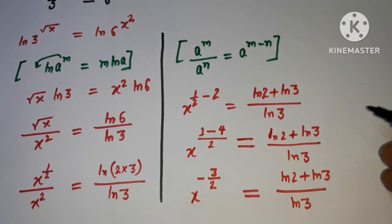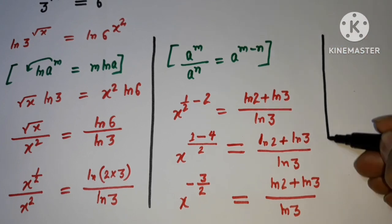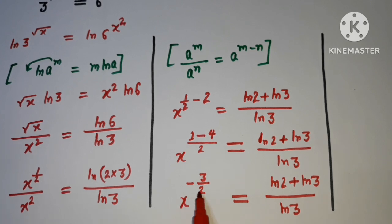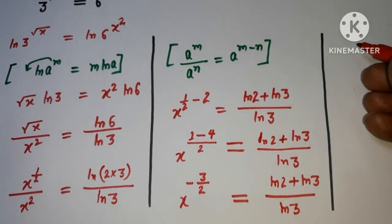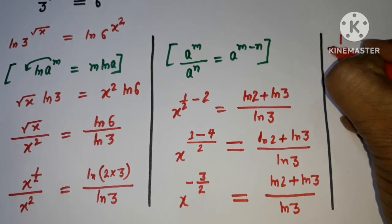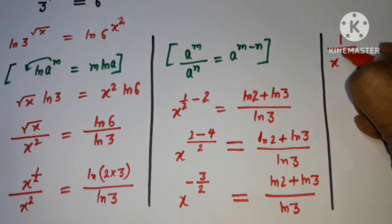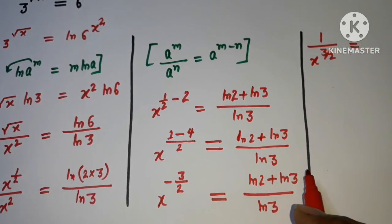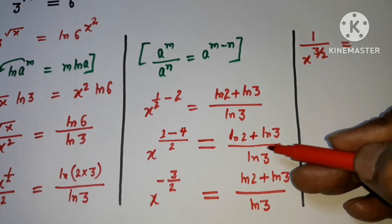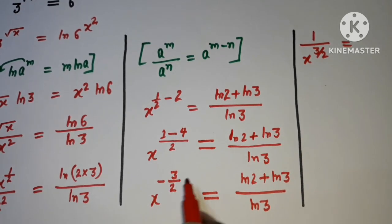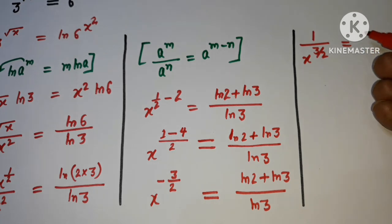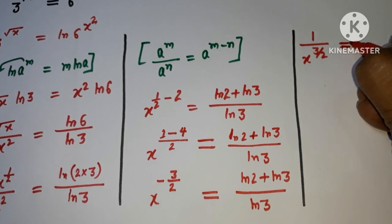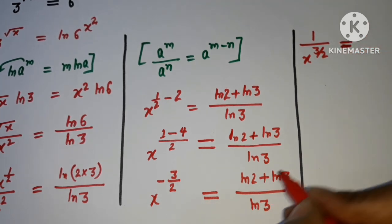Since we have a negative exponent, it's better to write it as positive. I can write x to the power negative 3/2 as 1 upon x to the power 3/2. This way the negative exponent changes into a positive exponent.